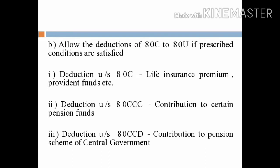Under income tax, we have five heads of income. We will add these five heads of income to compute the total income.